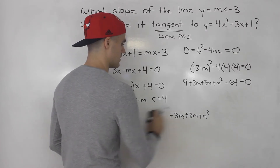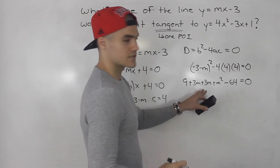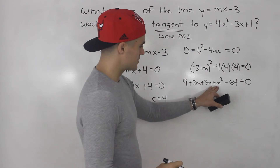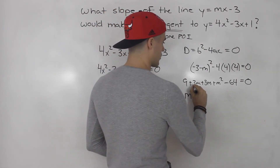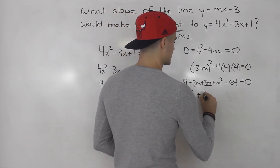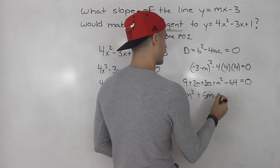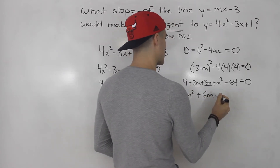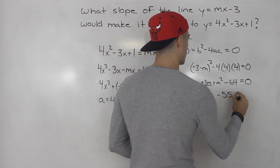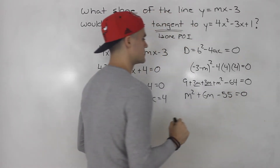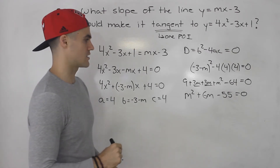From here, let's collect like terms. So m squared — let's put that in front. 3m plus 3m gives us 6m. And then 9 minus 64 gives us negative 55. So we have m squared plus 6m minus 55 equals 0. And now we just have a quadratic to solve. You could throw this into the quadratic formula.